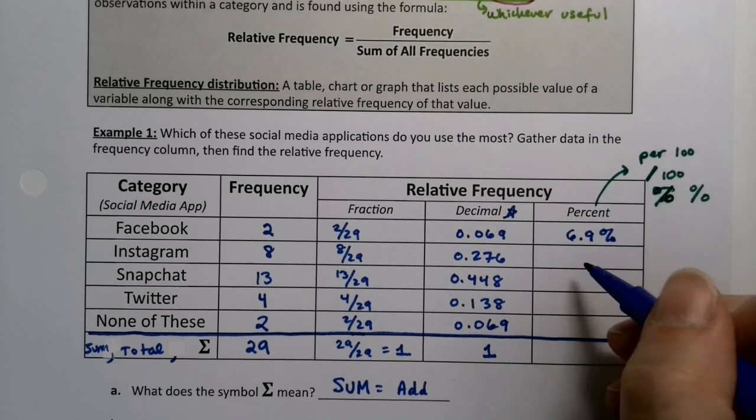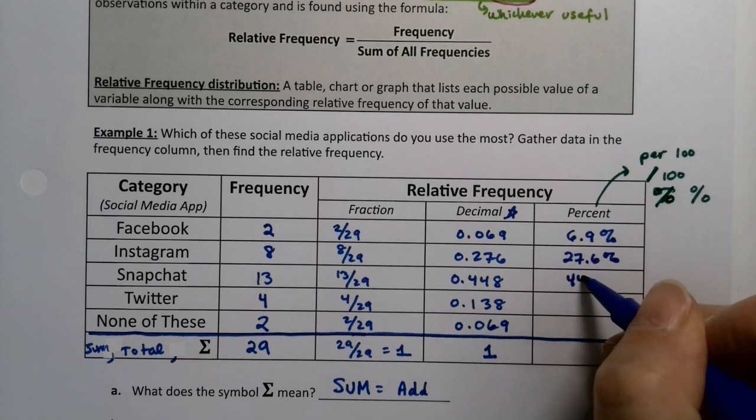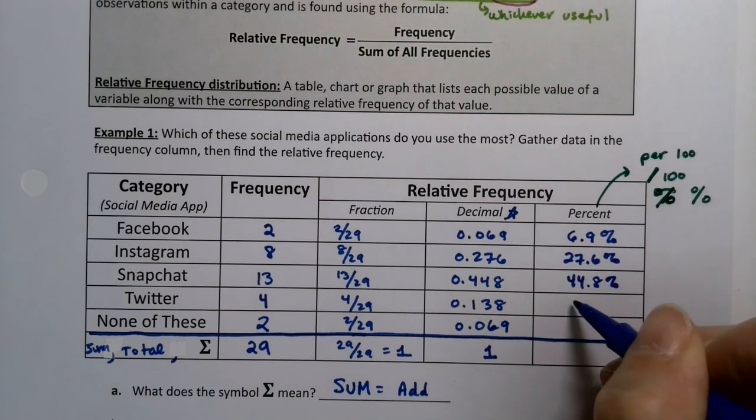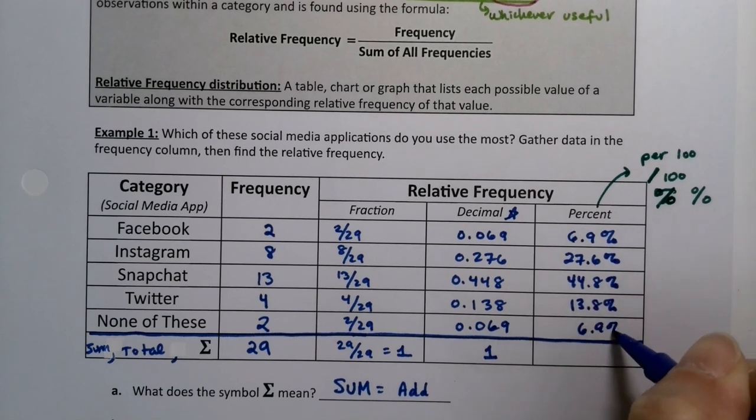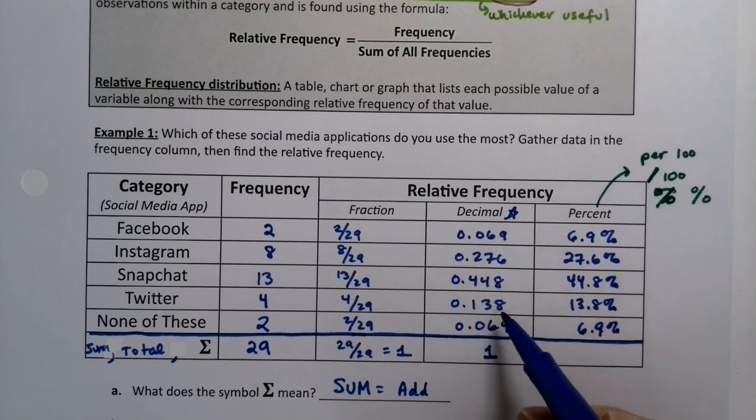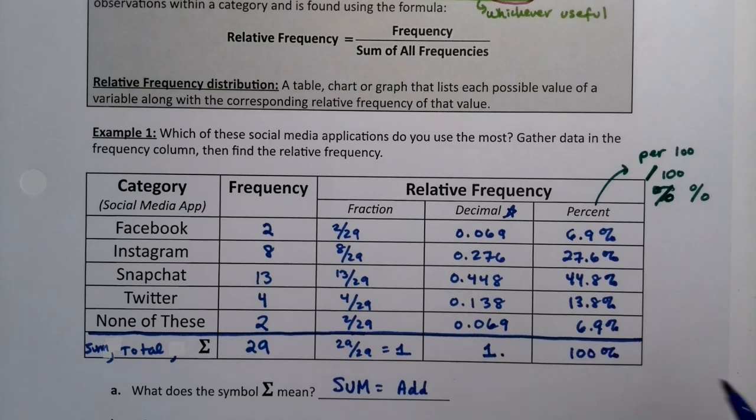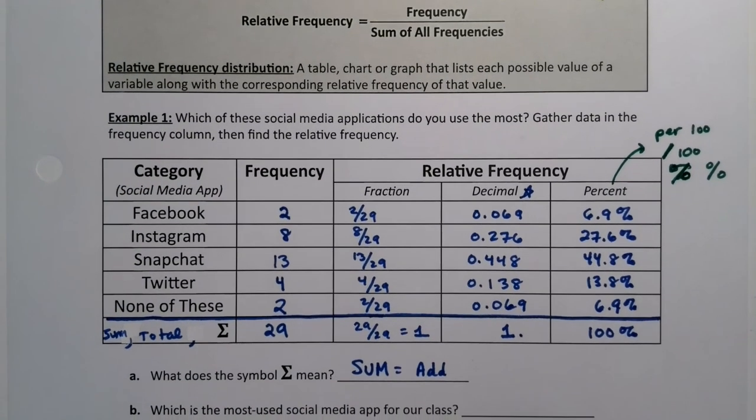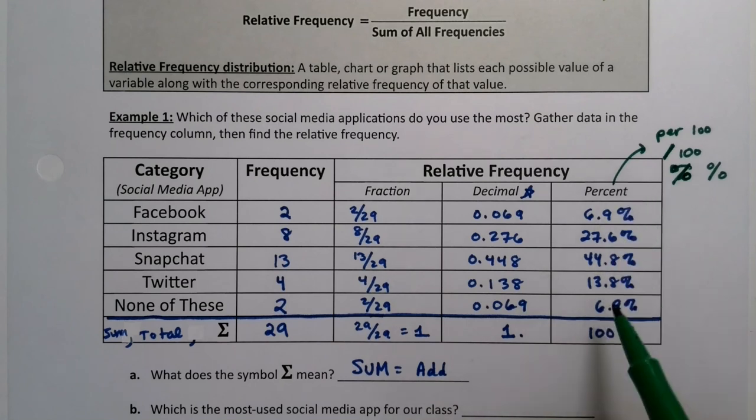You have to write the little percent sign: 27.6%, 44.8%, 13.8%, and 6.9%. Of course, if the decimals add up to one, if you move the decimal two spots over it would make a hundred percent. Now the percent again is the least used in a table. As a matter of fact, we use decimals the most often, but it can be used.